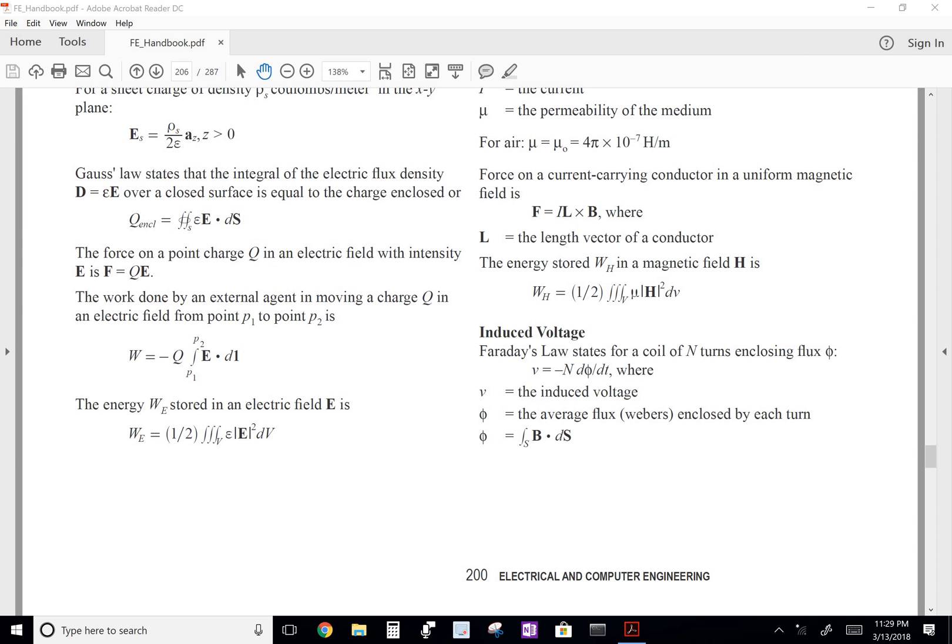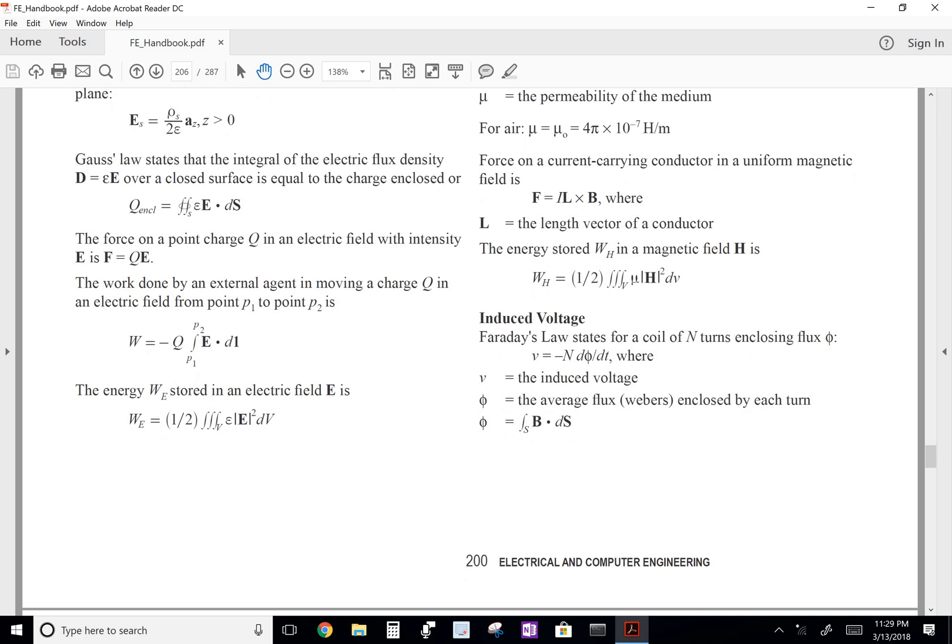And on the very first page of the electrical and computer engineering section, we have the definition of work done on a particle. So, the work done by an external agent in moving a charge Q in an electric field from point P1 to point P2 is given by this equation here, where Q is the charge, E is the electric field, and L is the distance.